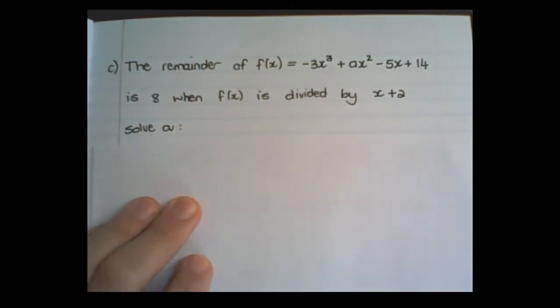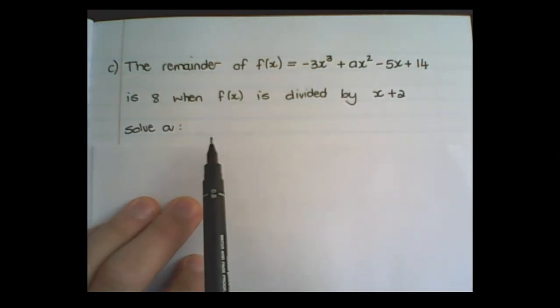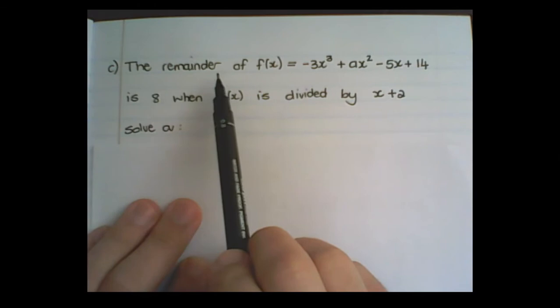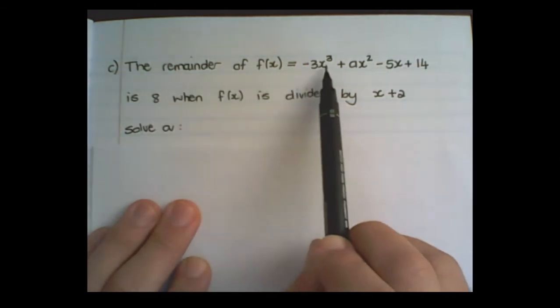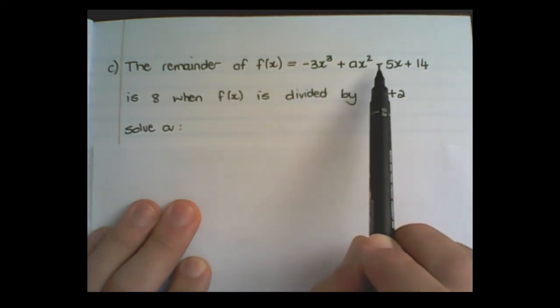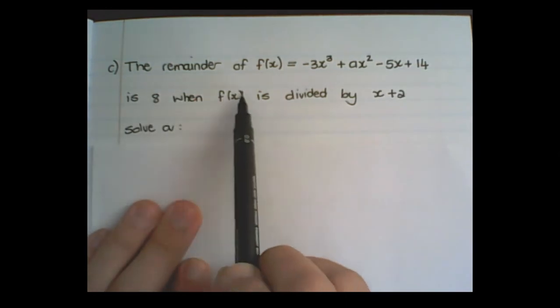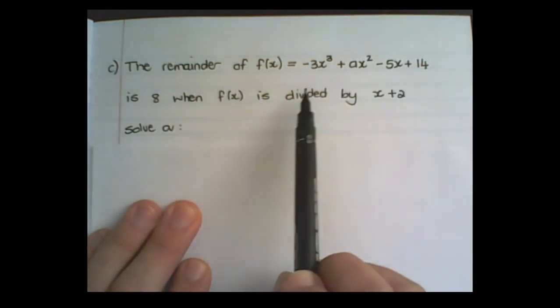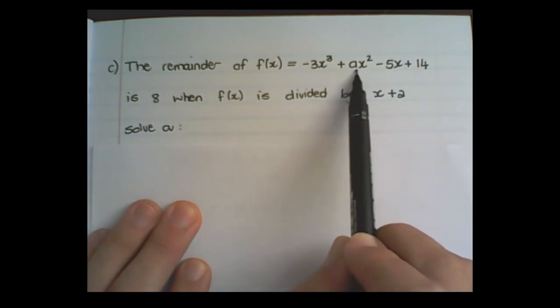You can also use the remainder theorem to find values of variables in the expression. So the remainder of fx, where fx equals negative 3x cubed plus ax squared minus 5x plus 14, is 8 when fx is divided by x plus 2. Find or solve the value of a.